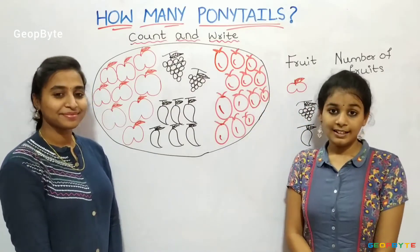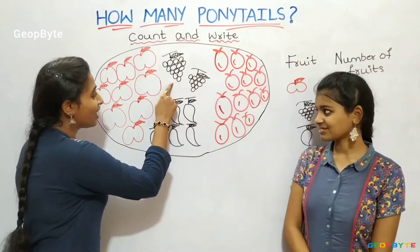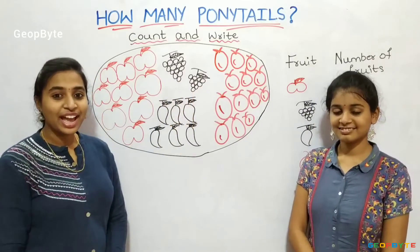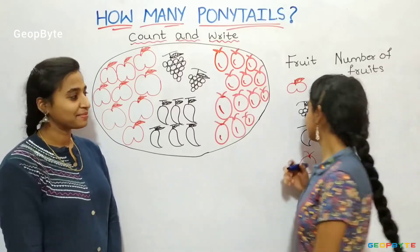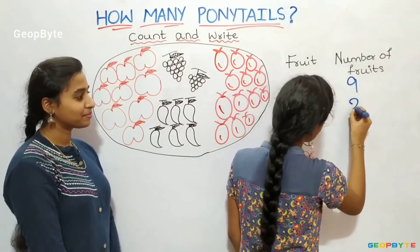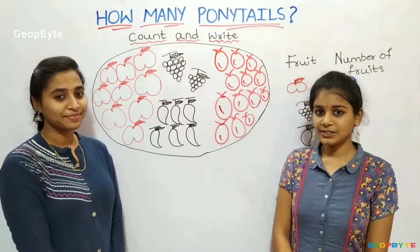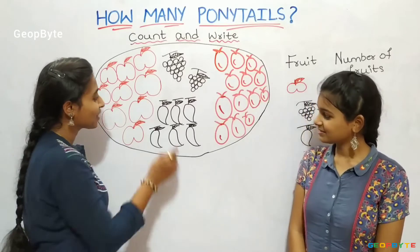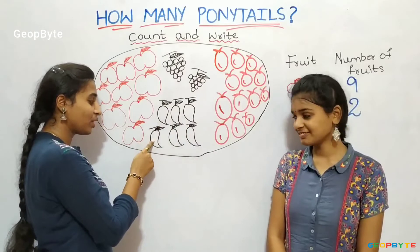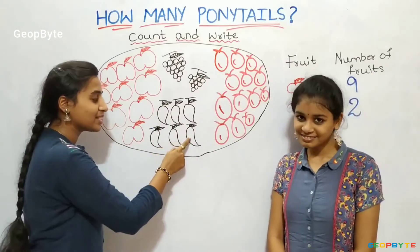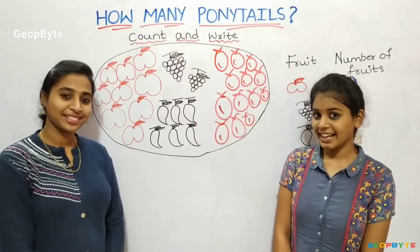Now let us count grapes: 1, 2. We have 2 grapes — let us write 2. Now let us count mangoes: 1, 2, 3, 4, 5, 6. We have 6 mangoes — let us write 6.